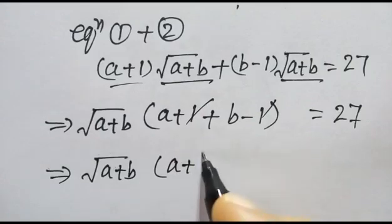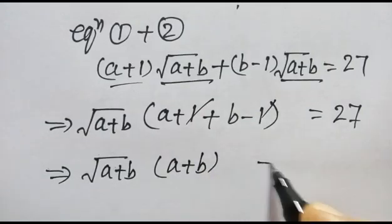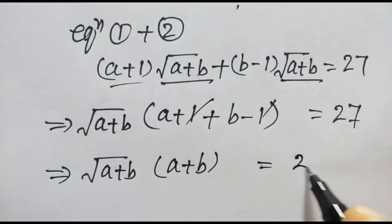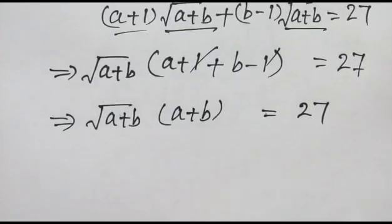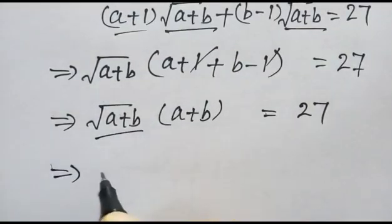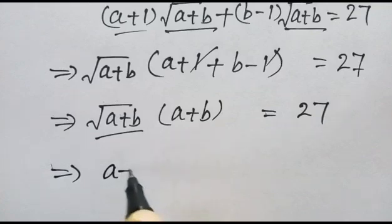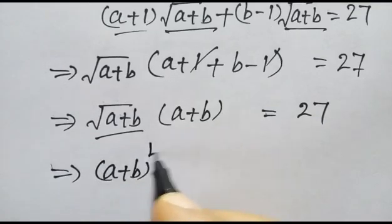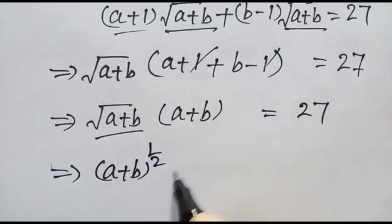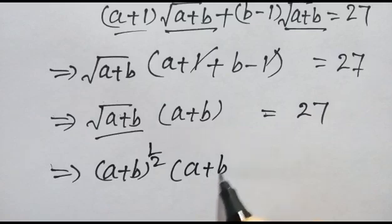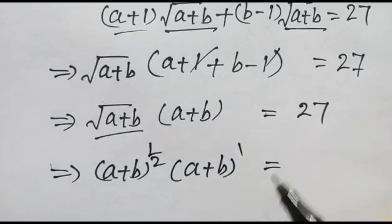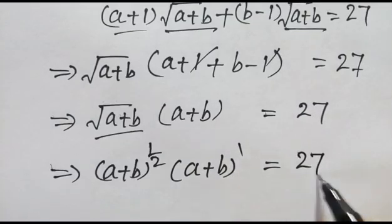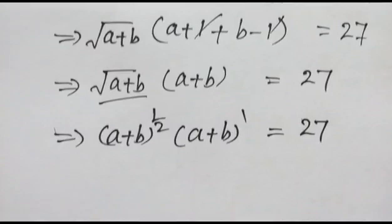So A plus 1 plus B minus 1 gives us A plus B, and the square root of A plus B cancels out. So we have A plus B to the power 1 times square root of A plus B — meaning A plus B to the power 3 by 2 — is equal to 27.